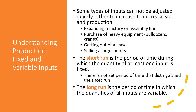The long run is the period in which the quantities of all inputs are variable. There is no set period that distinguishes the short run from the long run — it is determined by how long it takes to acquire new inputs in particular industries. If in construction all inputs can be adjusted in three months, the short run is three months. If in education it takes two years to add classroom space, the short run is two years.